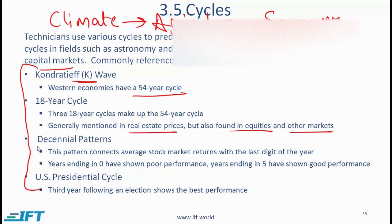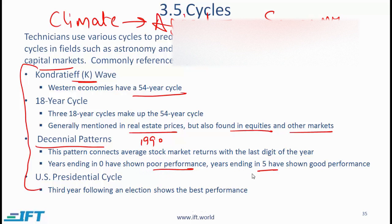You have something called a decennial pattern. This pattern connects average stock market returns with the last digit of the year. It has been seen generally that years ending in 0, for example 1990, have shown poor performance relative to years ending in 5, such as 1985 or 1975.